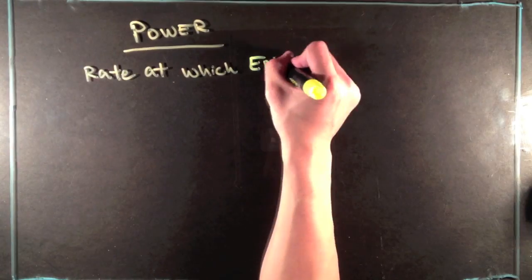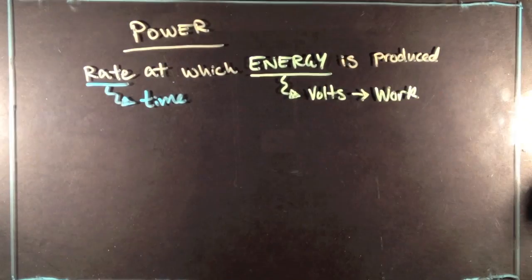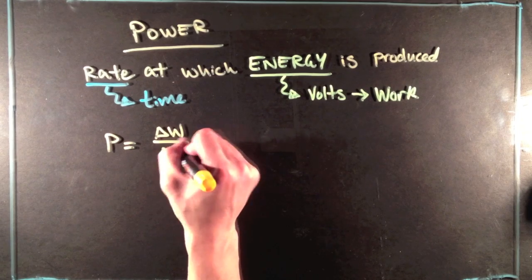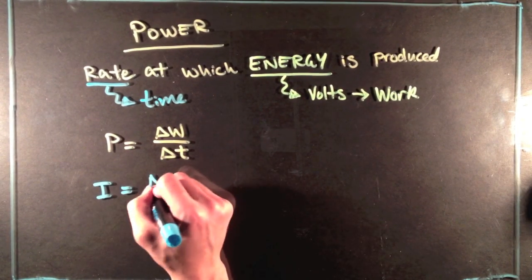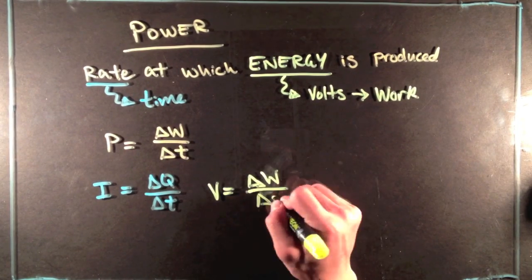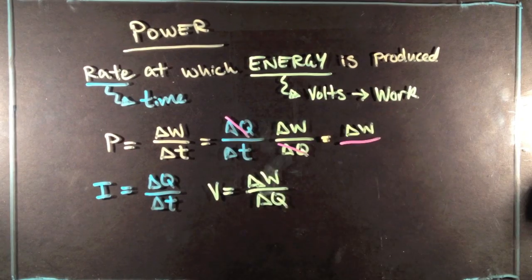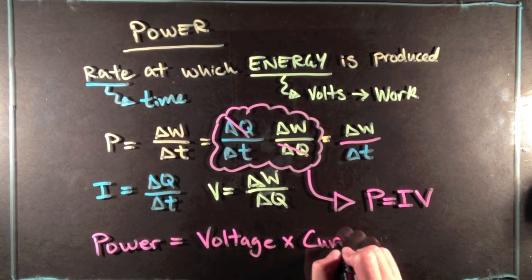The last thing we're going to take a look at is power and how it's related to current and voltage. Power is just the rate at which energy is produced. So, power is just a change in work over a change in time. So, if you recall from earlier that current is just the amount of charge per time, and that voltage is just the amount of work done by a charge, you might recognize that the product of the two actually equals power, where power equals voltage times current.